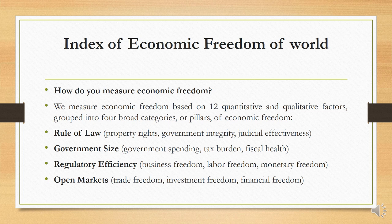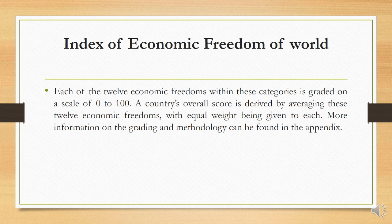How do you measure economic freedom? As the previous slides explain, we measure across four categories of economic freedom: Rule of Law, Government Size, Regulatory Efficiency, and Open Markets. Each of the 12 economic freedoms within these categories is graded on a scale of 0 to 100. A country's overall score is derived by averaging these 12 economic freedoms with equal weight given to each. More information on grading and methodology can be found in the appendix.